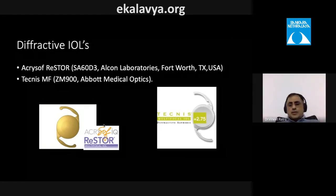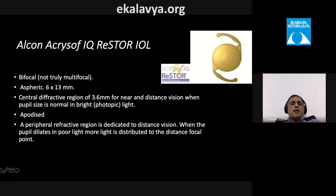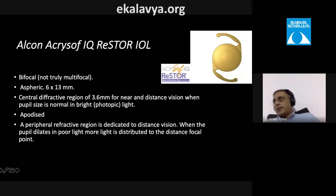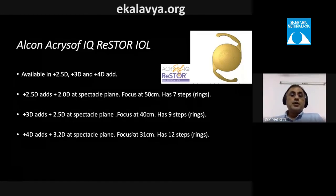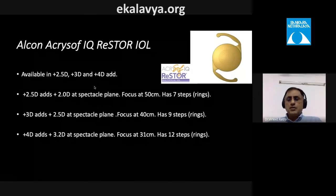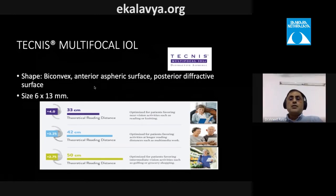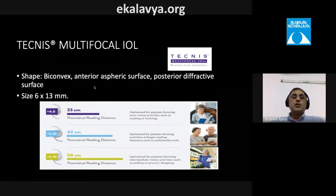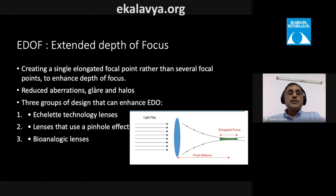The most well-known diffractive IOLs are the AcrySof IQ ReSTOR and the TECNIS Multifocal. The ReSTOR is technically bifocal, not multifocal: it has a central diffractive region of 3.6 mm dedicated to near, with the peripheral area dedicated to distance so that vision improves as the pupil dilates. It is available in +2.5, +3.0, and +4.0 diopter add powers. The TECNIS multifocal has a posterior diffractive surface and anterior aspheric surface, available in +2.75, +3.25, and +4.0 diopter adds.